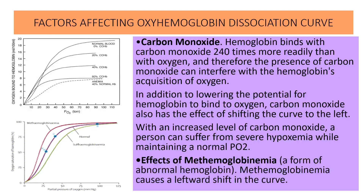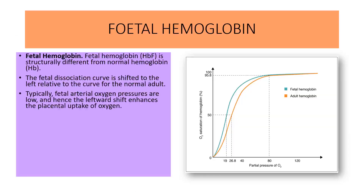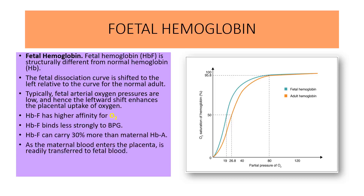Next is the effect of methemoglobinemia, a form of abnormal hemoglobin. Methemoglobin causes a leftward shift of the curve. Fetal hemoglobin is structurally different from normal hemoglobin; the fetal dissociation curve is shifted to the left relative to the curve for normal adults. Fetal arterial oxygen pressures are low, and the leftward shift enhances placental uptake of oxygen. Fetal hemoglobin has a higher affinity for oxygen, binds less strongly to BPG, and can carry 30% more oxygen than maternal hemoglobin A. As maternal blood enters the placenta, oxygen is readily transferred to the fetal blood.